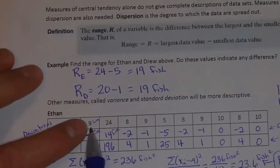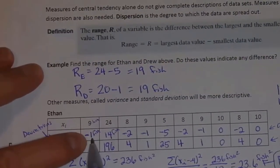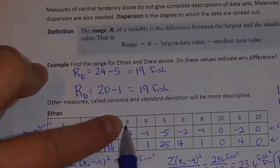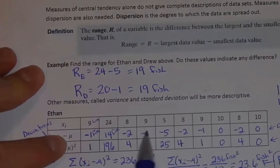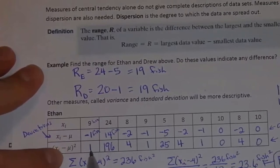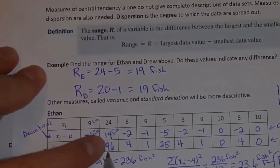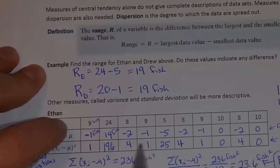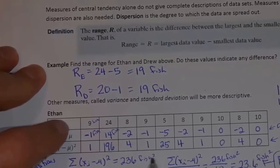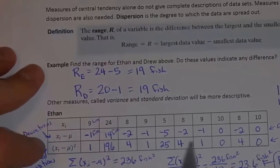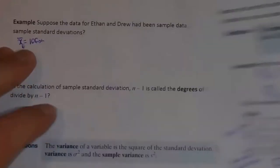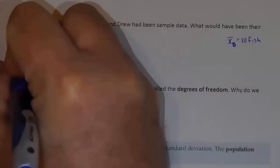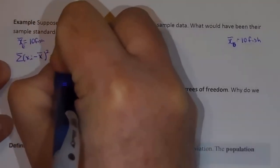If I take 9 minus 10, I'd still get negative 1. If I took 24 minus 10, I'd still get 14. 8 minus 10, I'd still get negative 2. So if this was sample data, all of these numbers would still be the same for Ethan. When I squared all of those, negative 1 squared would still be 1, 14 squared would still be 196, and so on — all of these numbers would still be the same. So if I added all of those numbers up, I'd still get 236 square fish. So for Ethan, the sum of his squared deviations would still be 236 square fish.